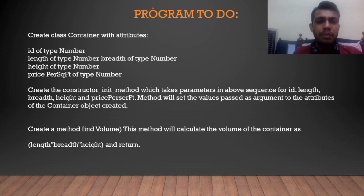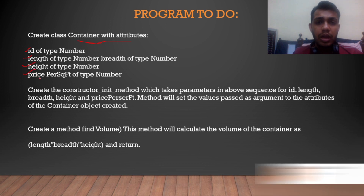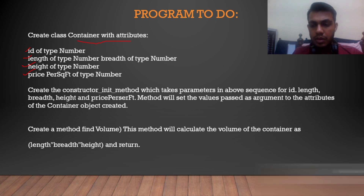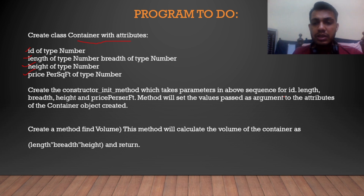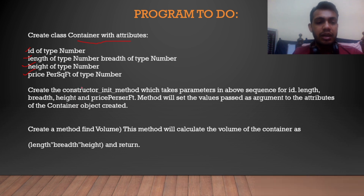So what was the Python program to do? Create a class Container with attributes. First we have to create a class Container with attributes: id of type integer, length, height, and price per square feet of type numbers. After that, create the constructor init method which takes parameters in the above sequence — id, length, breadth, height, and price per square feet.